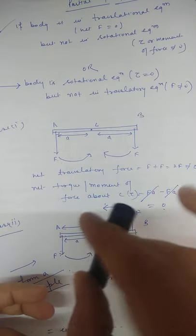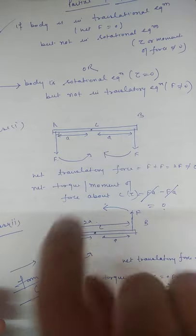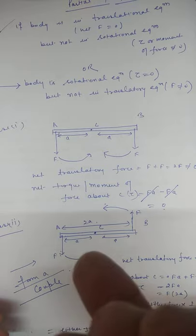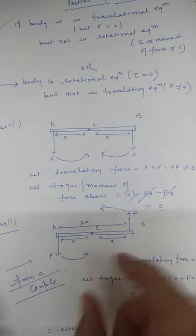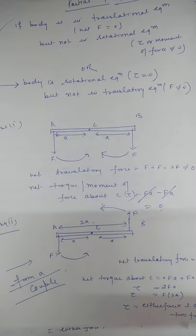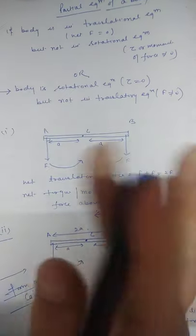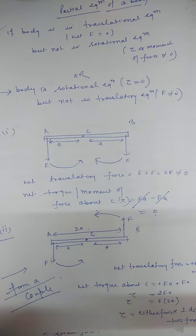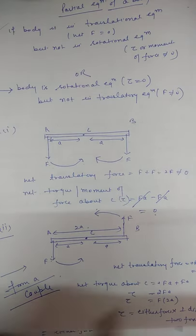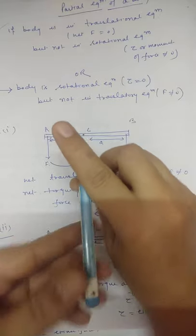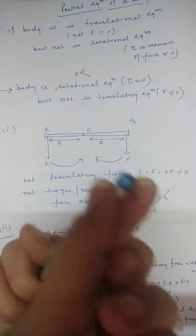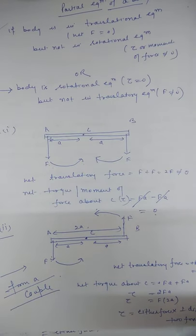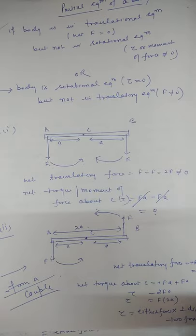To rotate a rod or a cap, you apply two forces — one along one direction and one along the opposite direction. For example, with a pencil held horizontally, if you apply force in one direction with one hand and in the opposite direction with the other hand, the pencil rotates. A couple always rotates the body.